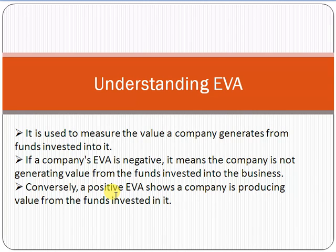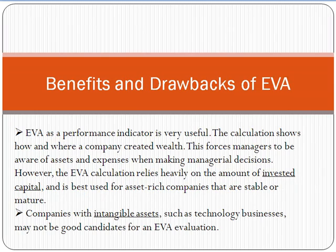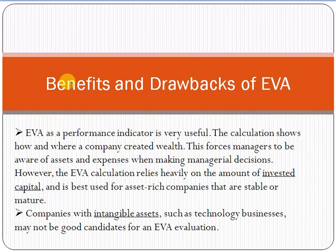If EVA is negative, it means the company is getting less value compared to its investment. If EVA is positive, the company is getting more value compared to their investment. EVA is an indicator that shows how and where a company created wealth, giving very good insight into where a company should and should not invest.